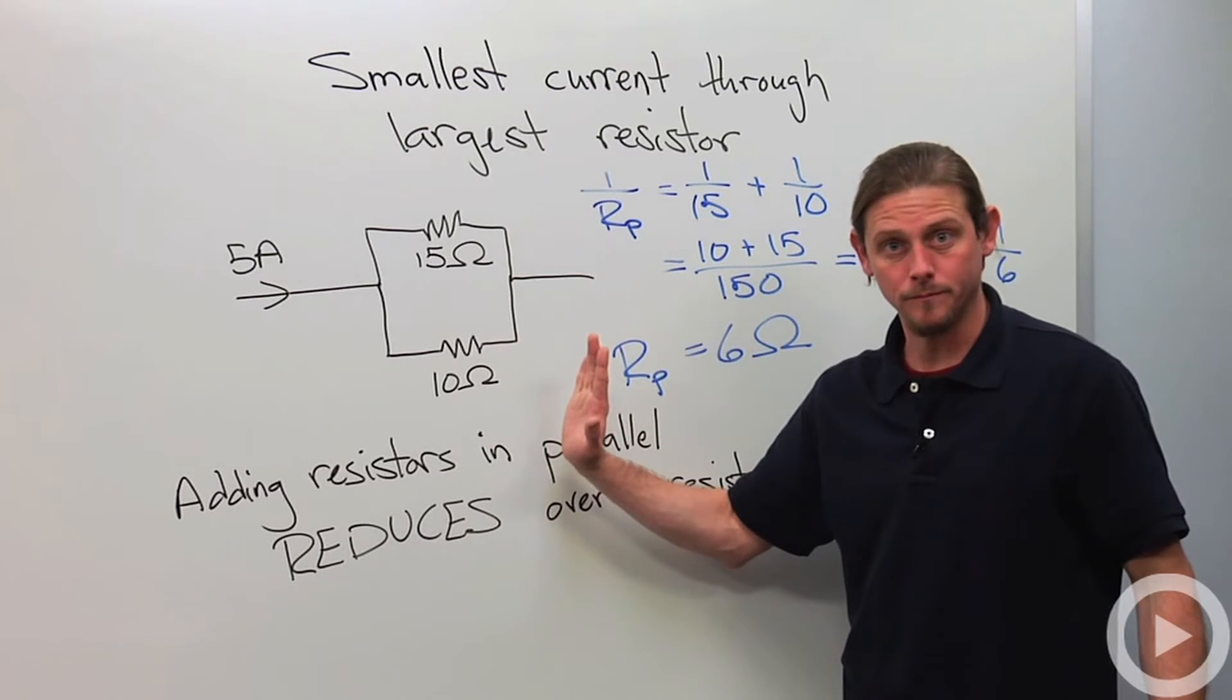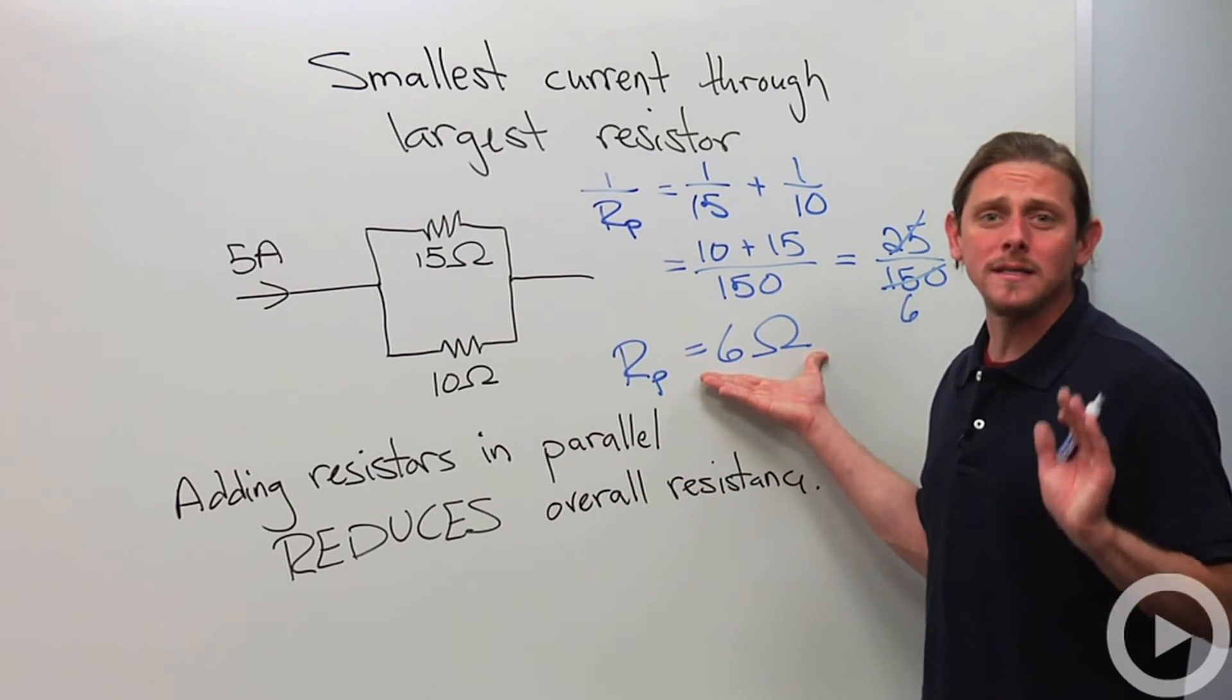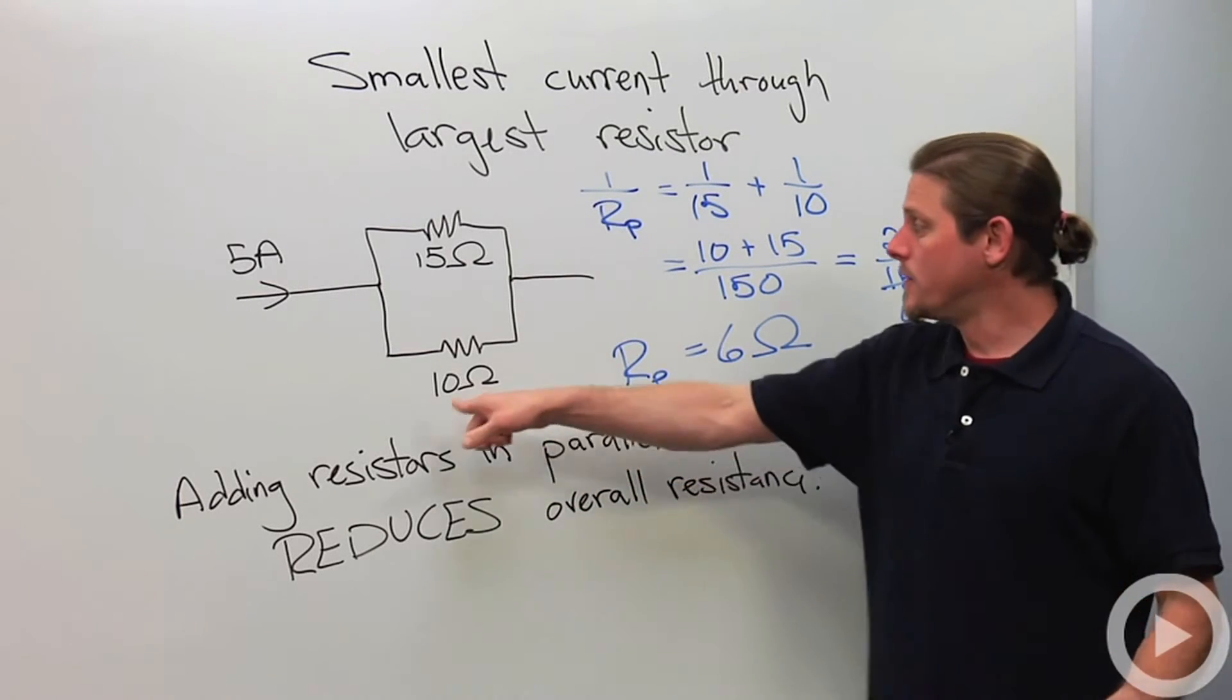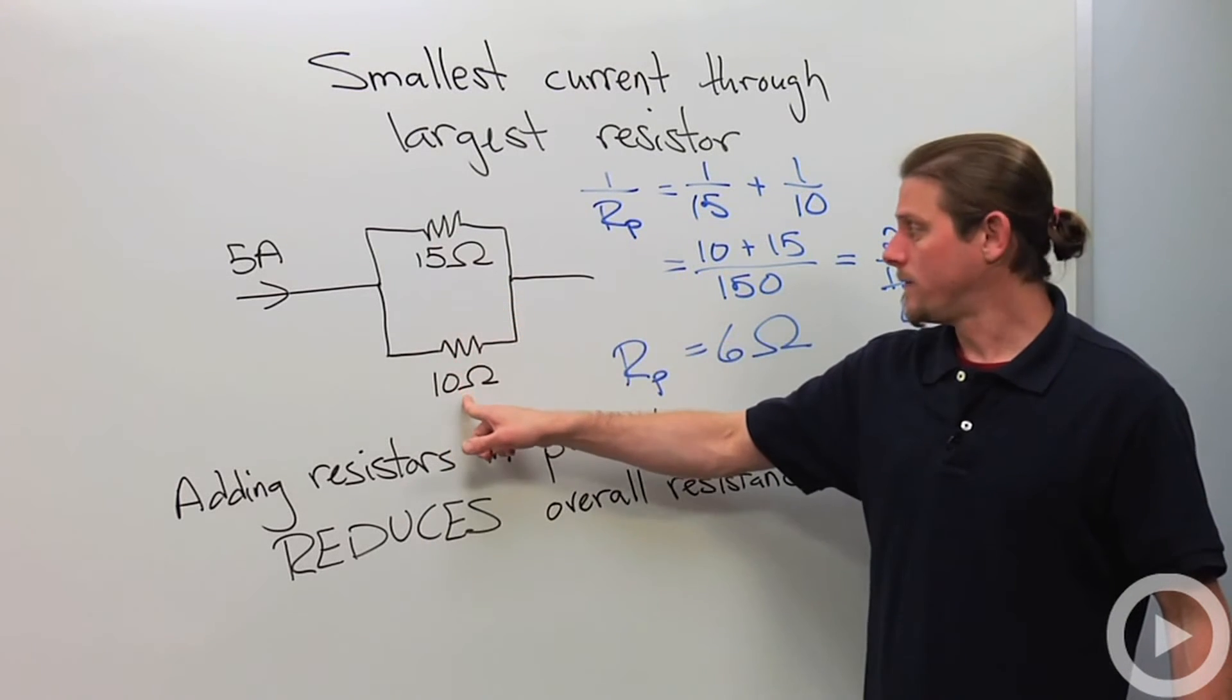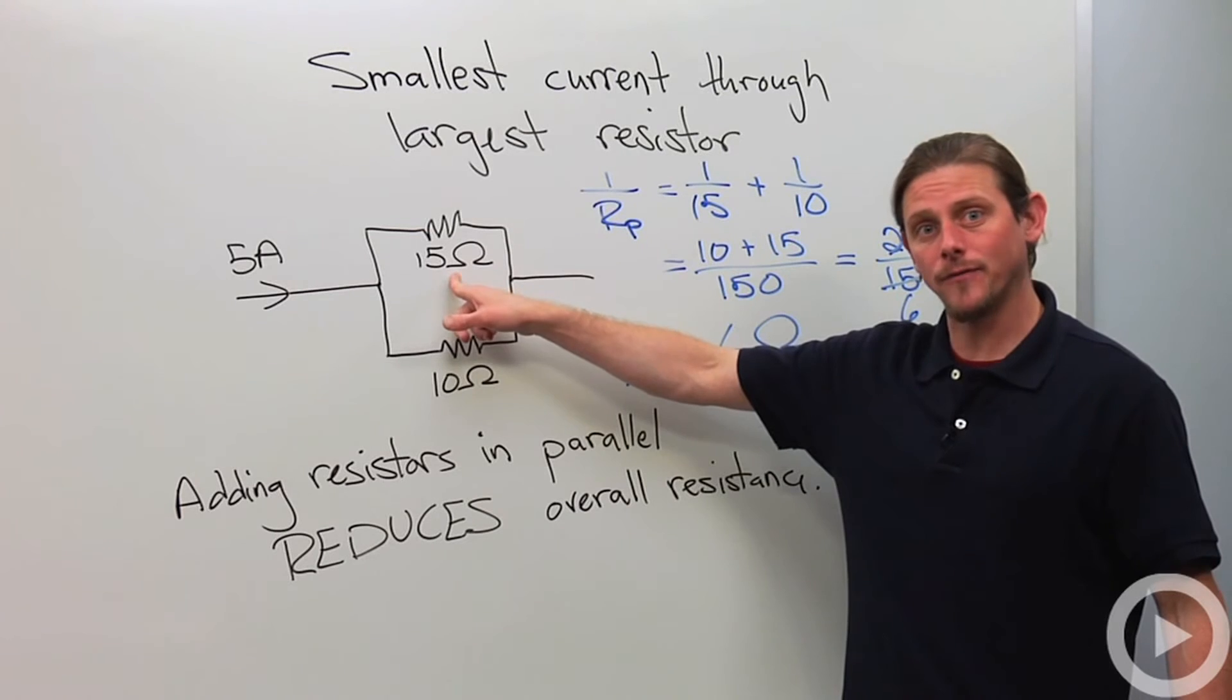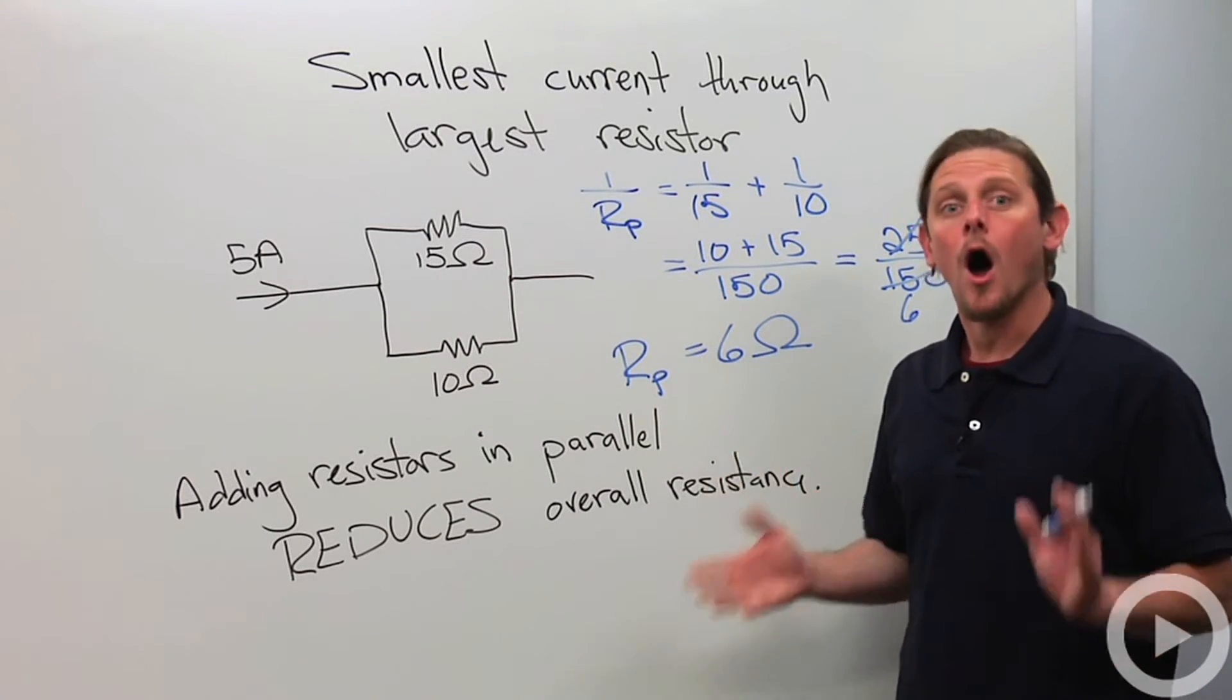Notice that our effective resistance is smaller than either of the two resistances that we added together. Smaller than either of them. And in fact, this number will always lie between this one divided by two and this one divided by two. 5, 7 1⁄2, 6. It will always work that way.